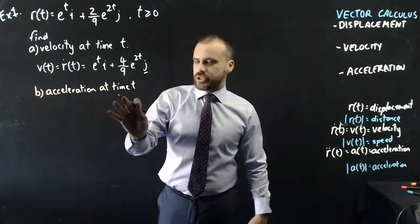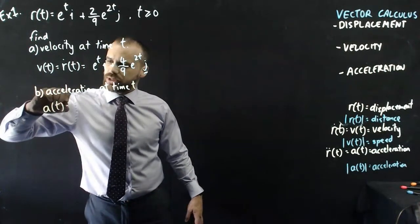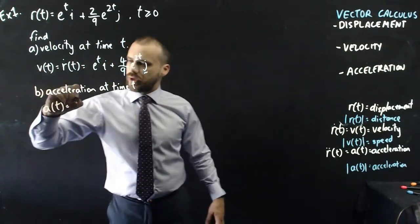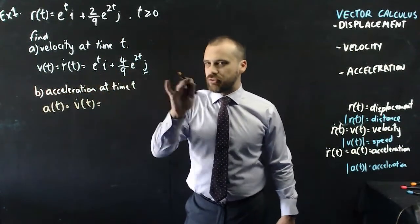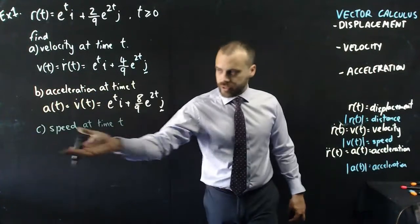What about the acceleration at time t? Well, that's going to be acceleration at time t, which is equal to v dot with respect to t. So, now I can just find the derivative of velocity, and that will give me acceleration.